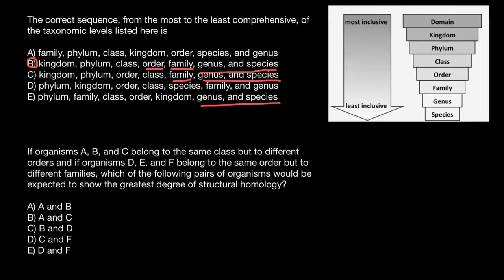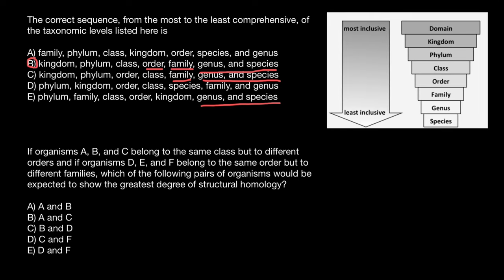Now, I want you to take a look at these taxonomic ranks. We have species, genus, family, order, class, phylum, kingdom, and domain. If you do not remember all of them, at least now I hope you would remember the order of the last four.